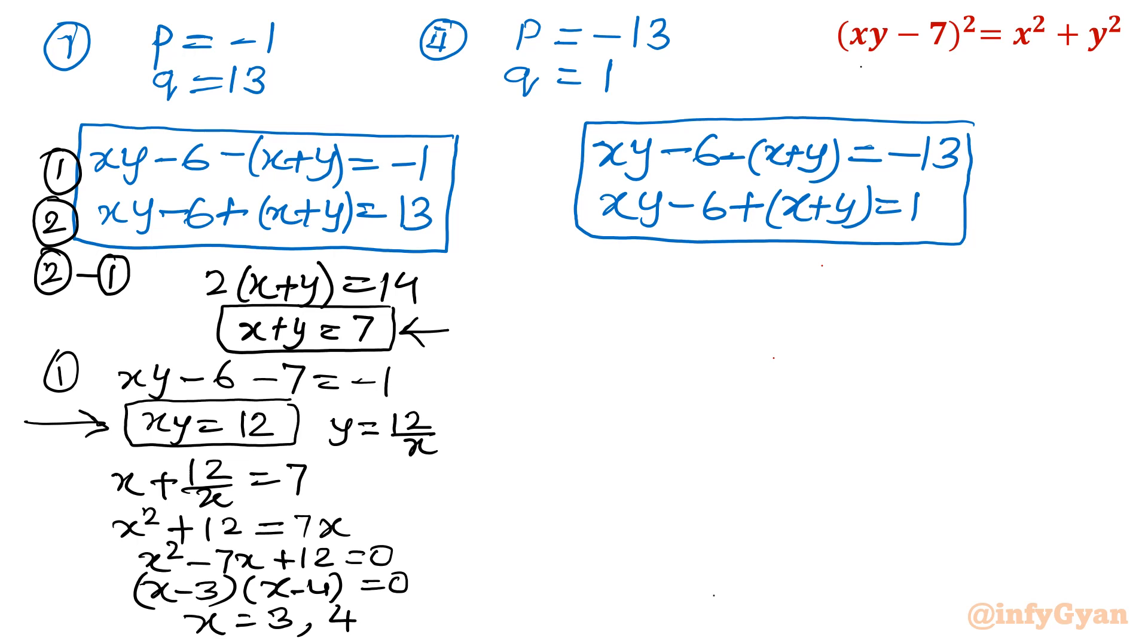Now you can see here xy is equal to 12. So if x is equal to 3, then y will be 4, because this product is 12. If x is 3, y will be 4. If x is 4, y will be 3. So 2 pairs, basically xy pair I can collect from here: 3, 4 and 4, 3.